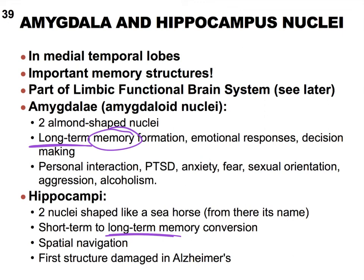The amygdala gets its name because the two nuclei are almond-shaped — 'amygdala' means almond. The hippocampus literally means seahorse, because of the shape of these two nuclei.